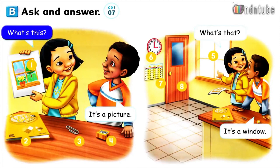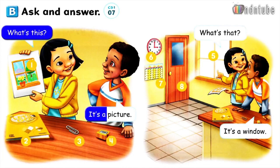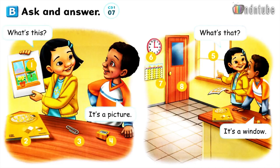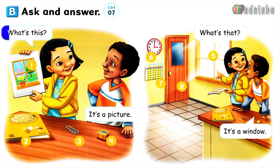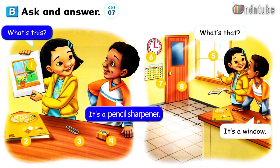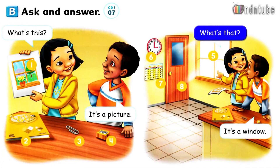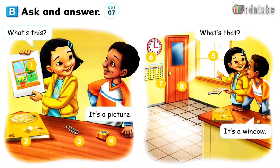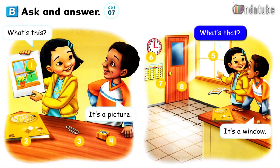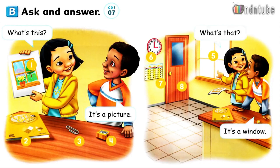It's a picture. What's this? It's a workbook. What's this? It's a paperclip. What's this? It's a pencil sharpener. What's that? It's a window. What's that? It's a clock. What's that? It's a calendar. What's that? It's a door.